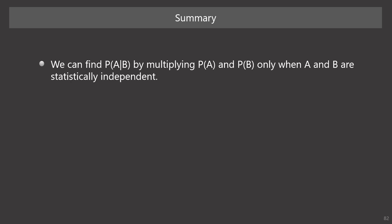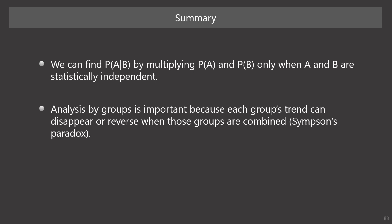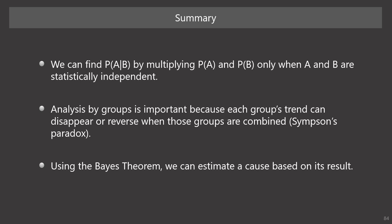Let me summarize the points of this chapter. First, when computing the probability of two events' intersection, we need to consider statistical independence. If the two events are statistically independent, we can multiply their probabilities to find the probability of intersection; however, if they are statistically dependent, we cannot. Second, according to Simpson's paradox, characteristics of each group can disappear or reverse when those groups are combined, so analyzing data by categories and computing conditional probability are important to avoid misunderstanding data. Finally, while we usually estimate a result based on its cause, by using Bayes' theorem we can estimate a cause based on a result. By knowing the tenet of Bayes' theorem, we can consider a confusing classification problem properly.